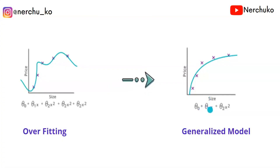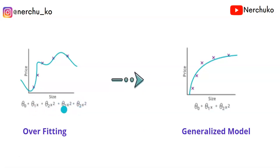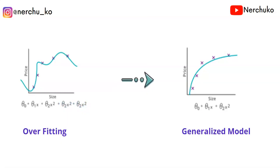Here we have a polynomial with terms like x², x³, x⁴. We have weights like theta 3 and theta 4. If we set theta 3 and theta 4 to zero, then automatically x³ and x⁴ are nullified. This converts the overfitting model into a generalized model. That is the idea of regularization.